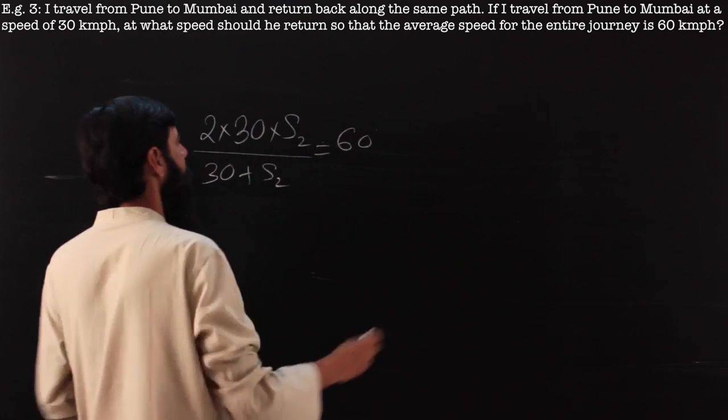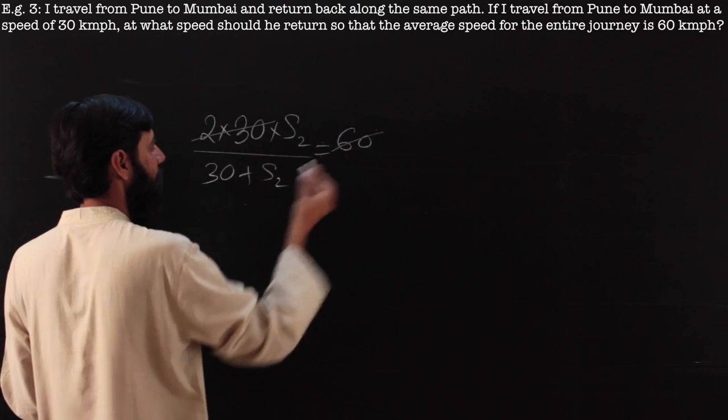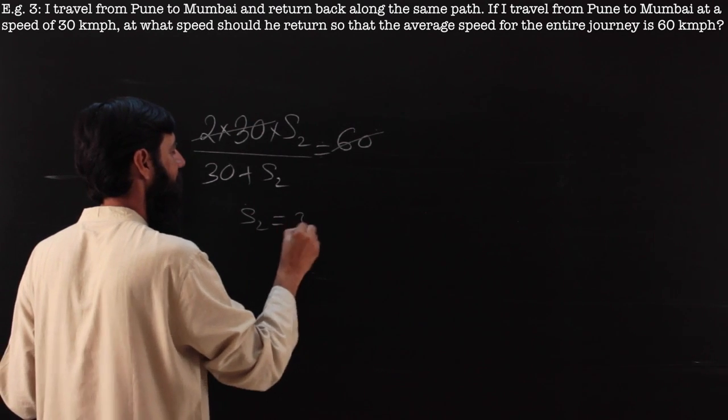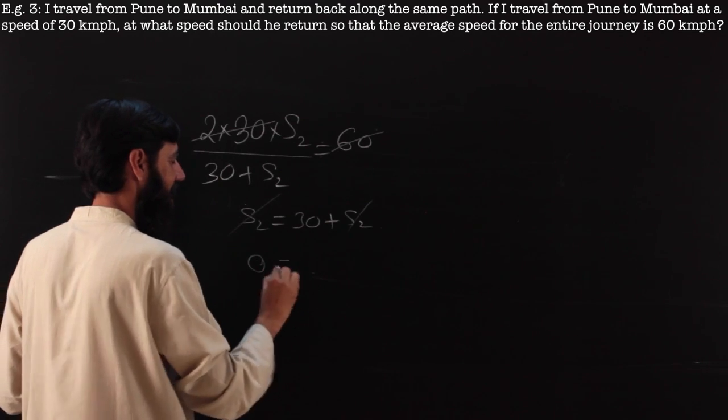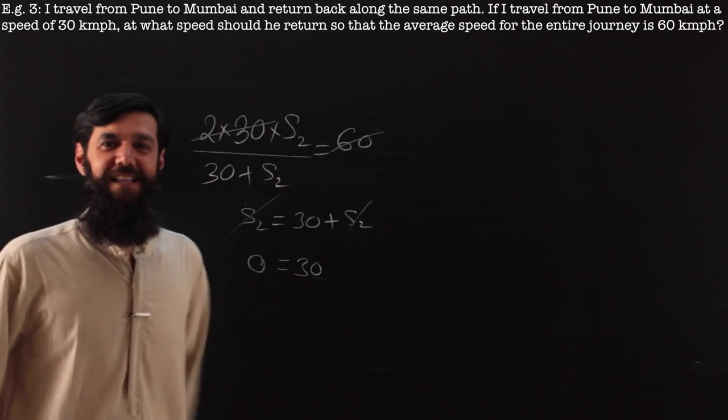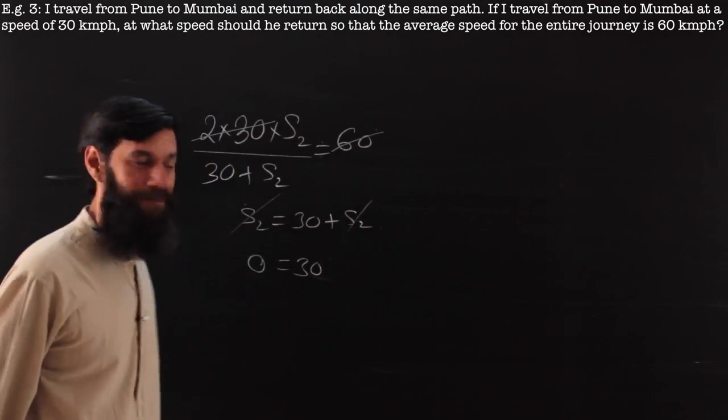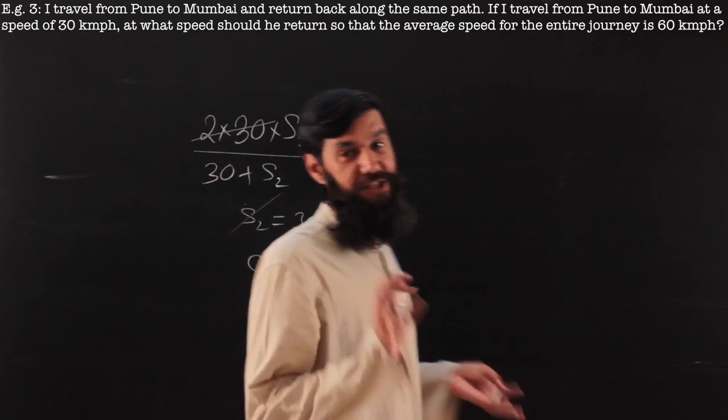The 2 into 30, 60 and 60 cancel out. Cross multiply: s2 is equal to 30 plus s2. The s2s cancel out, and I am left with some weird result, that is 0 is equal to 30. There is nothing wrong in the formula. Have I applied the formula in the correct situation?